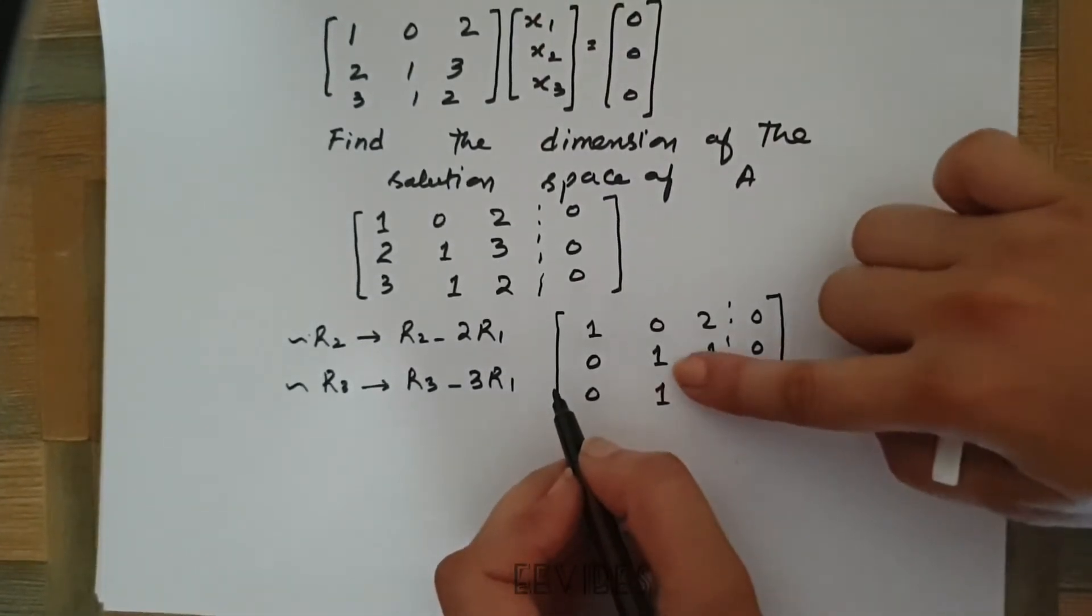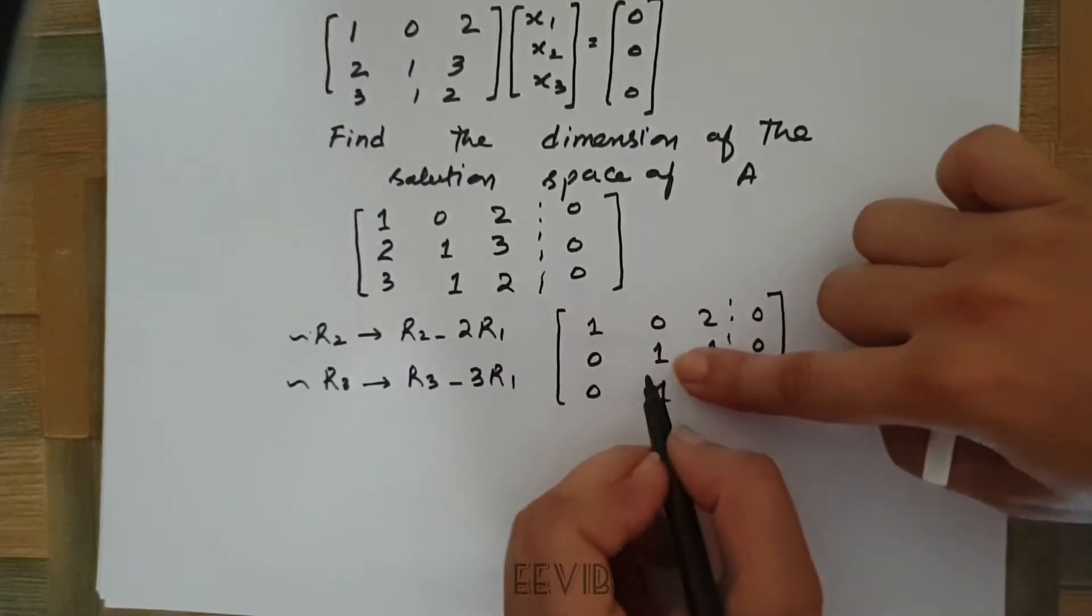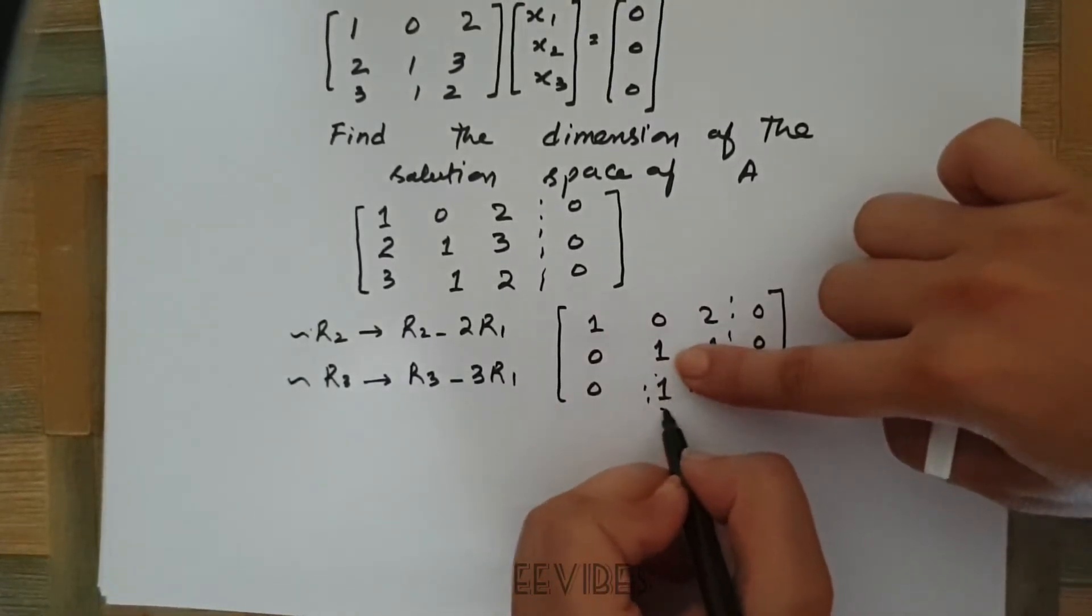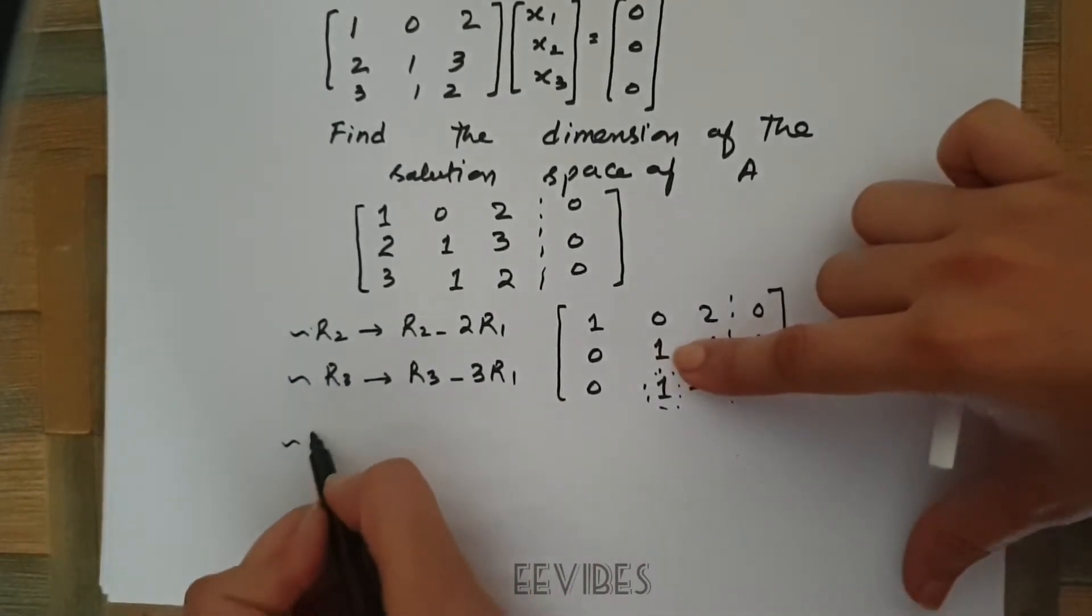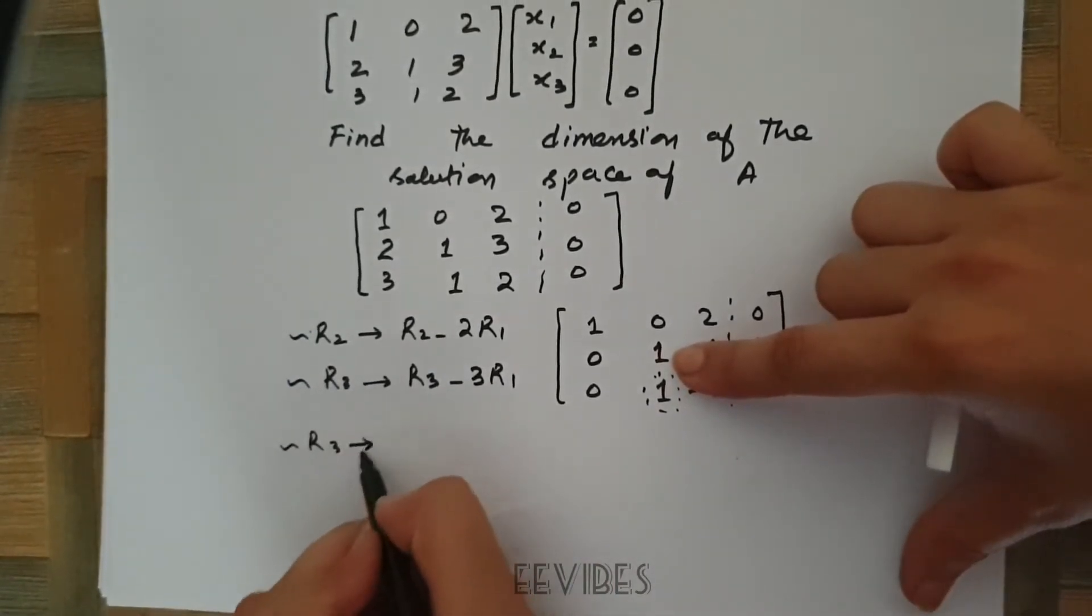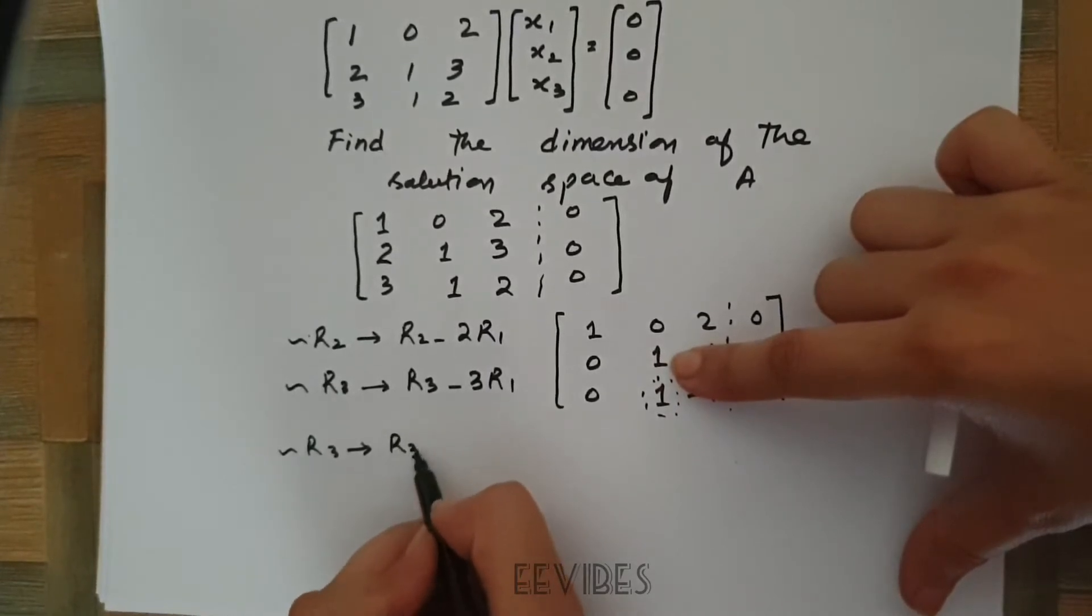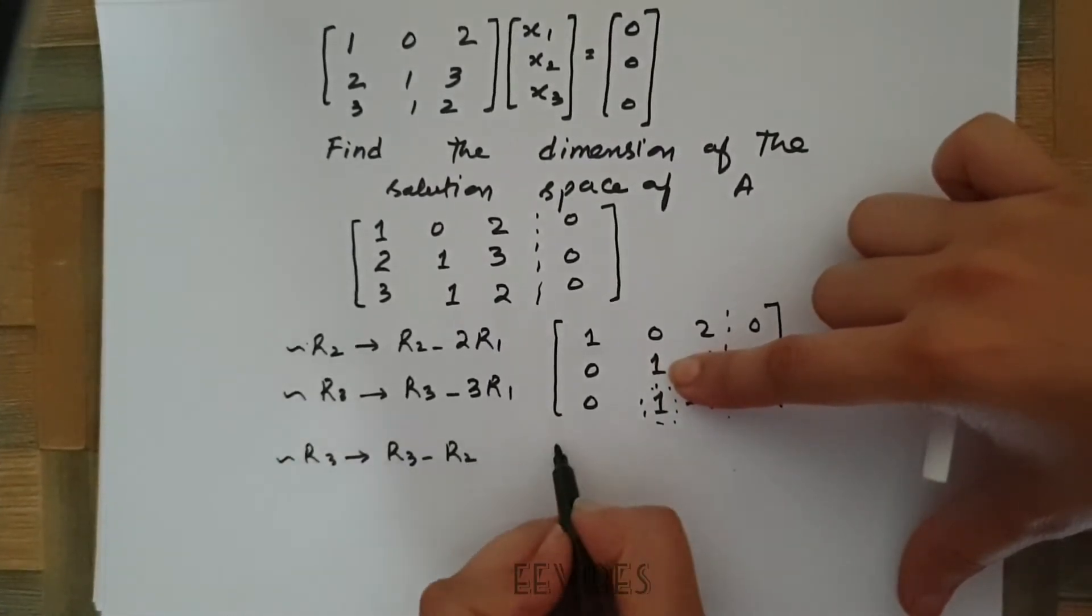Now this is my pivot entry in the second row, and I have to make this entry below the pivot entry equal to 0. All I need to perform is the operation on R3, and this is actually R3 minus R2 simply.